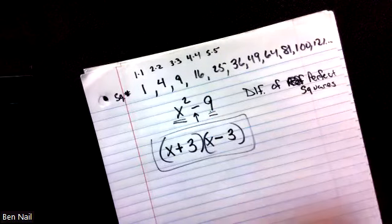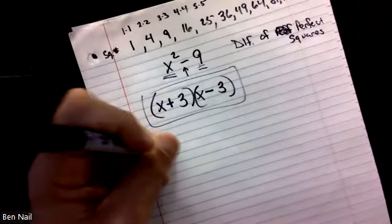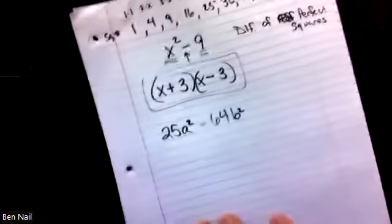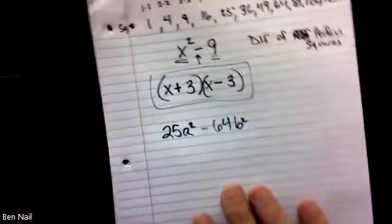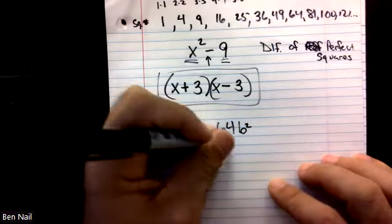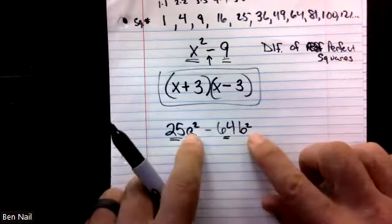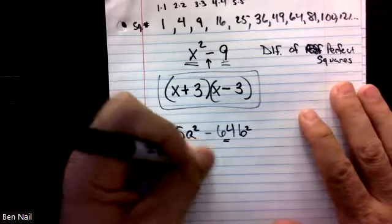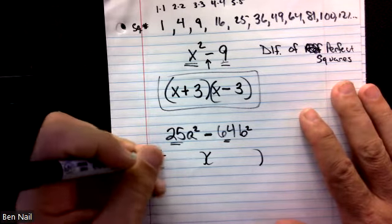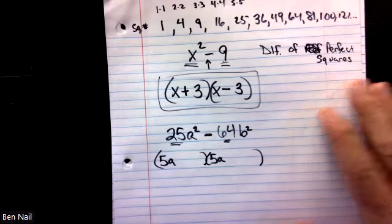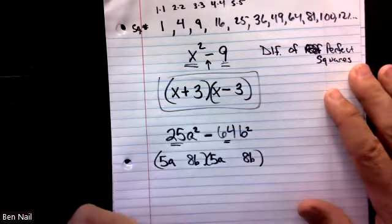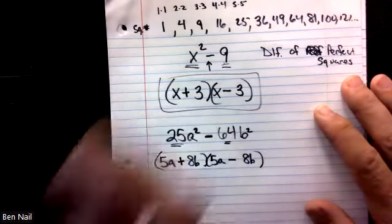For x squared minus 9: what multiplies by itself to get x squared? That's x and x. What multiplies by itself to get 9? That's 3 and 3. One gets a plus, one gets a minus: (x plus 3)(x minus 3). For a trickier example like 25a squared minus 64b squared: 25 is a perfect square, 64 is a perfect square, exponents are squared, and we're subtracting — difference of perfect squares. What multiplies by itself to get 25a squared? 5a and 5a. What multiplies by itself to get 64b squared? 8b and 8b. Make one plus, one minus: (5a plus 8b)(5a minus 8b).